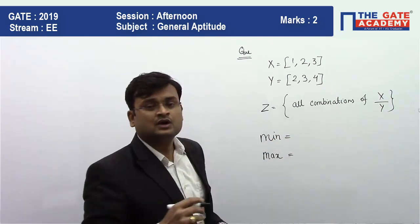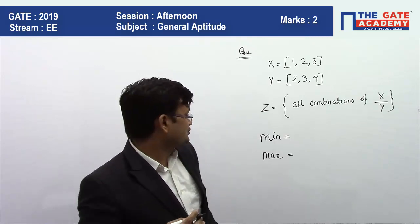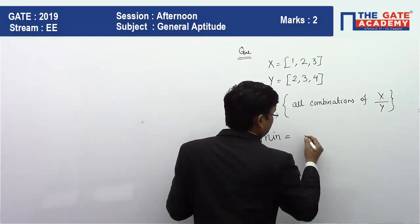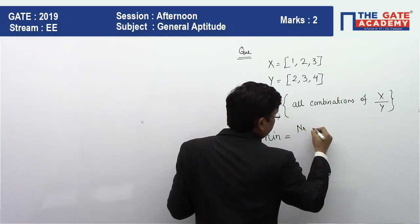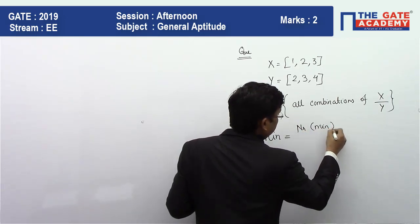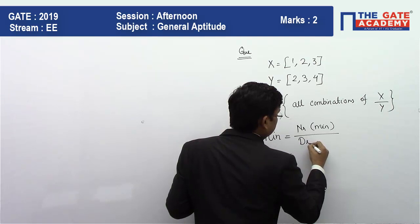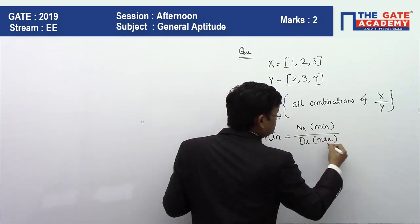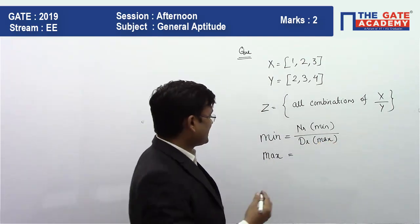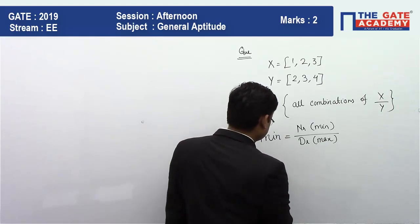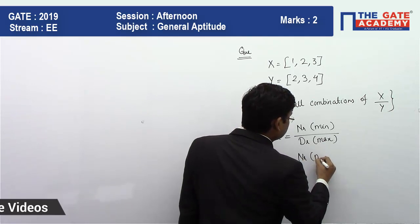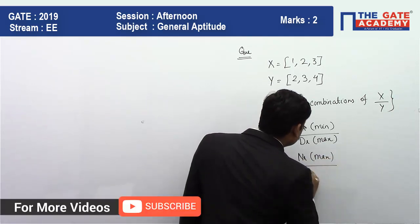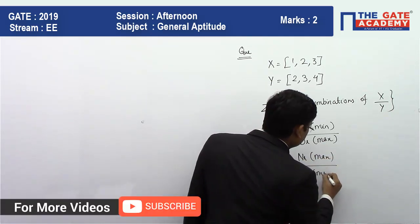So what is a minimum fraction? The minimum fraction is one in which the numerator is minimum and the denominator is maximum. For the maximum fraction, it is the reverse — where the numerator is maximum and the denominator is minimum.